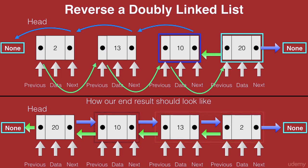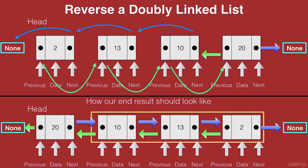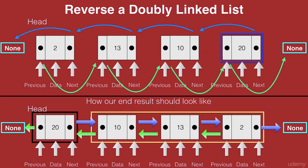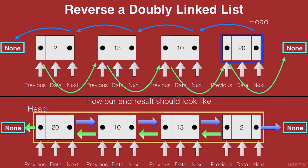Let's mark node 10 as complete and move on to the final node with data 20. In the end result, the next of 20 points to 10 and the previous of 20 points to none. We swap: we remove the none connection and make it point to the previous of 20, and make the previous pointer point to none. We then remove 2 as the head node and mark 20 as the new head node. Now the previous of 20 points to none and the next of 20 points to 10 — the reversal is complete, with 20 as the head node and 2 as the last node.